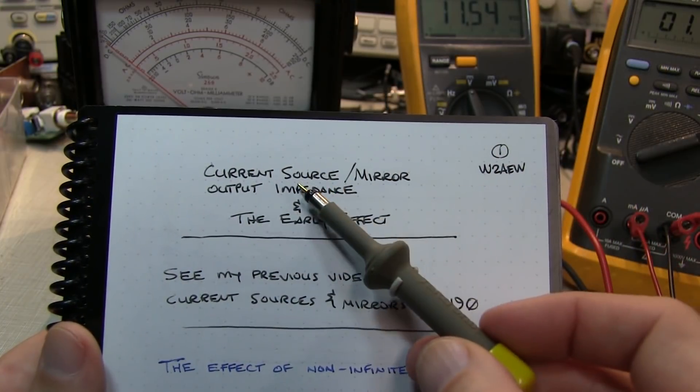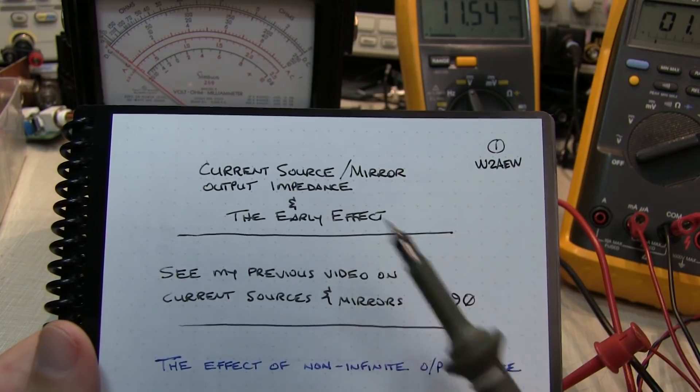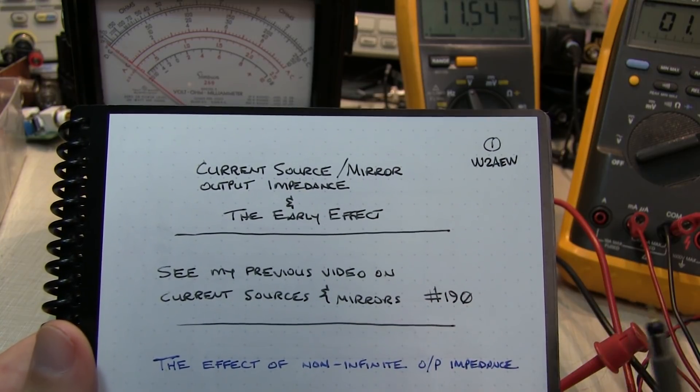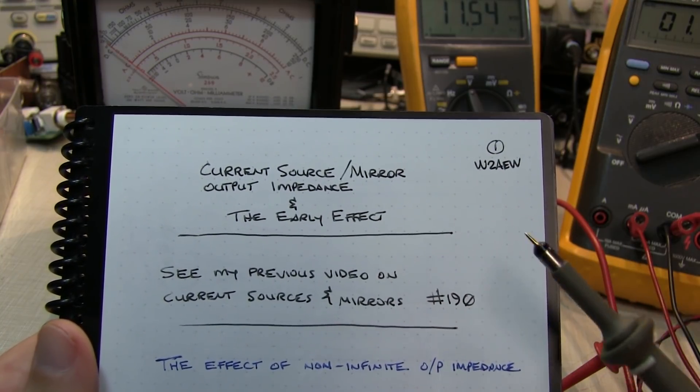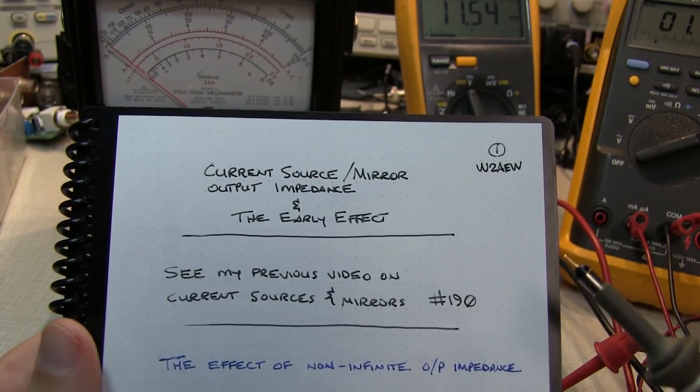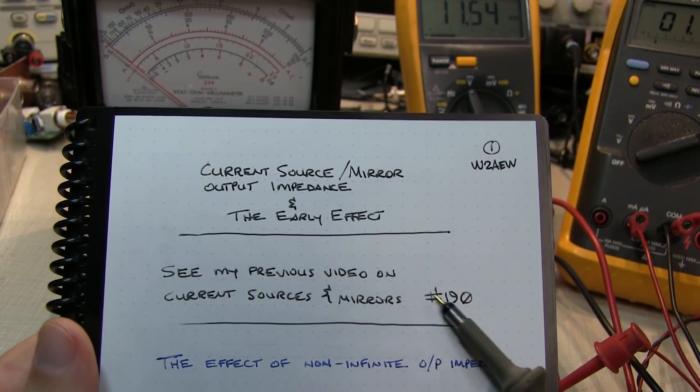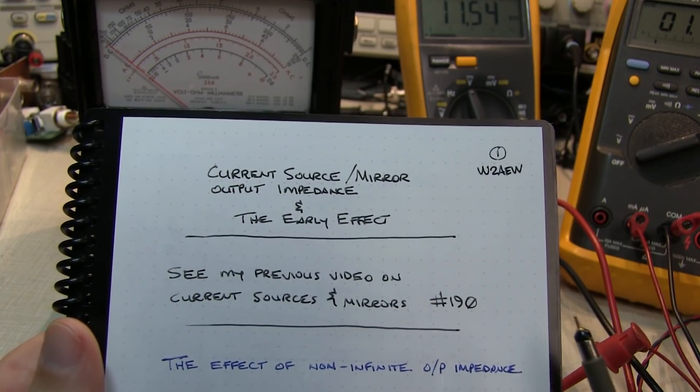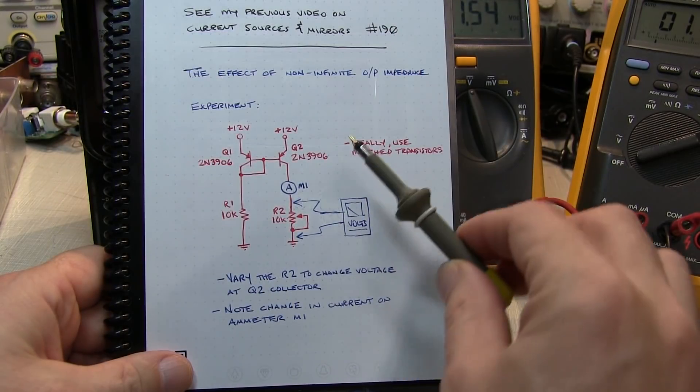Now before we get started talking about current source or current mirror output impedance and the early effect, if you're not familiar with bipolar transistor current sources or current mirrors, you may want to review my video number 190 that talks about these in more detail.